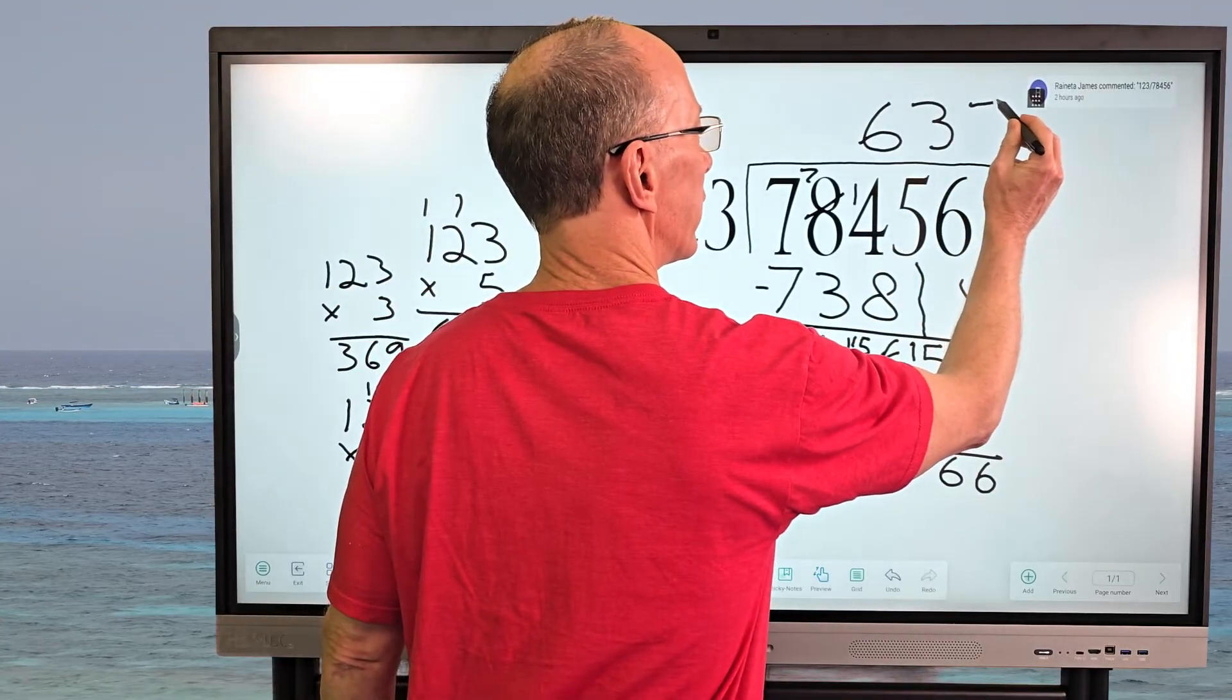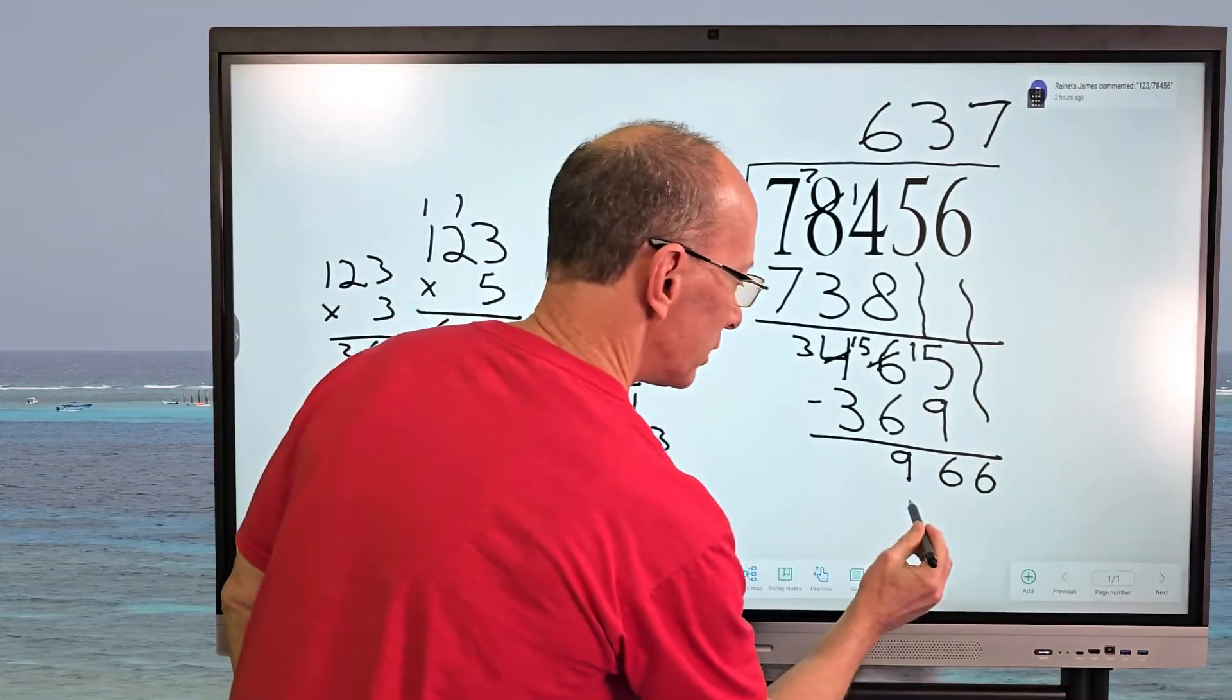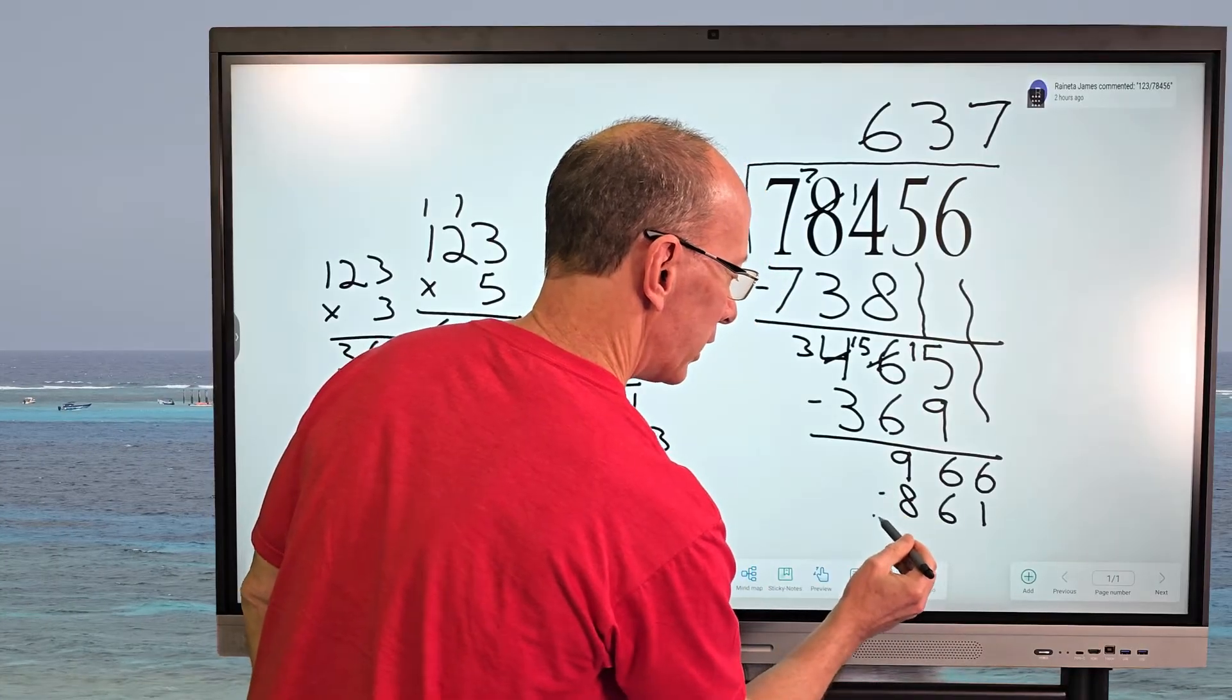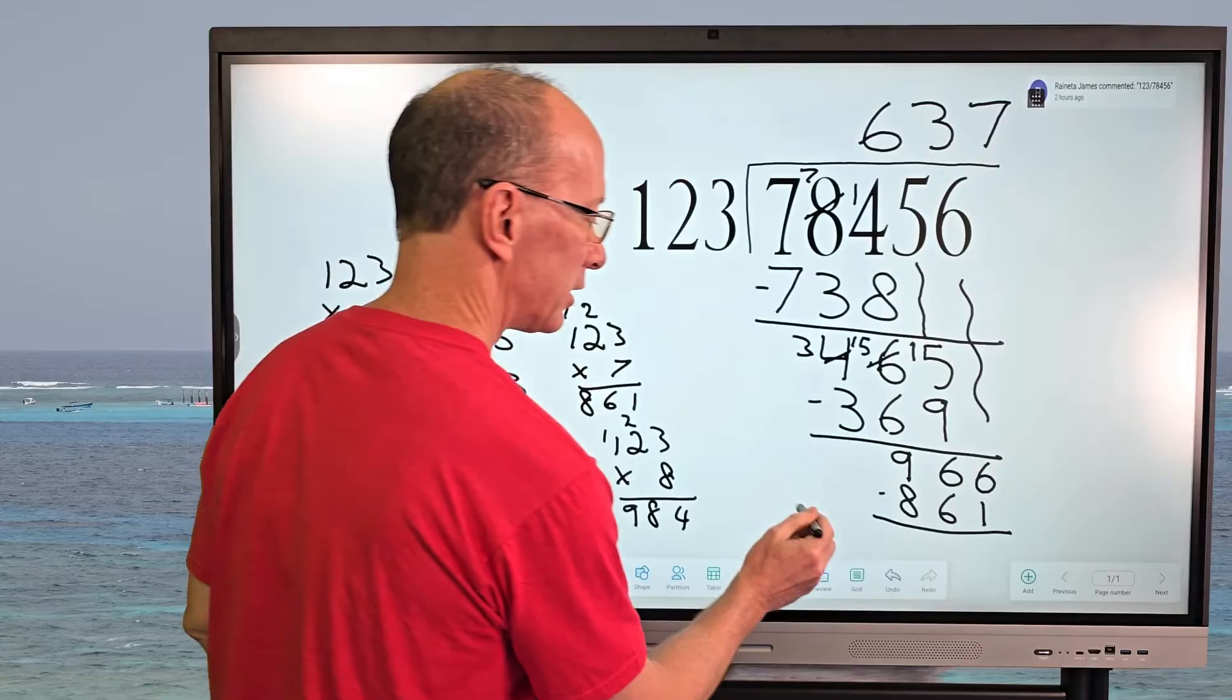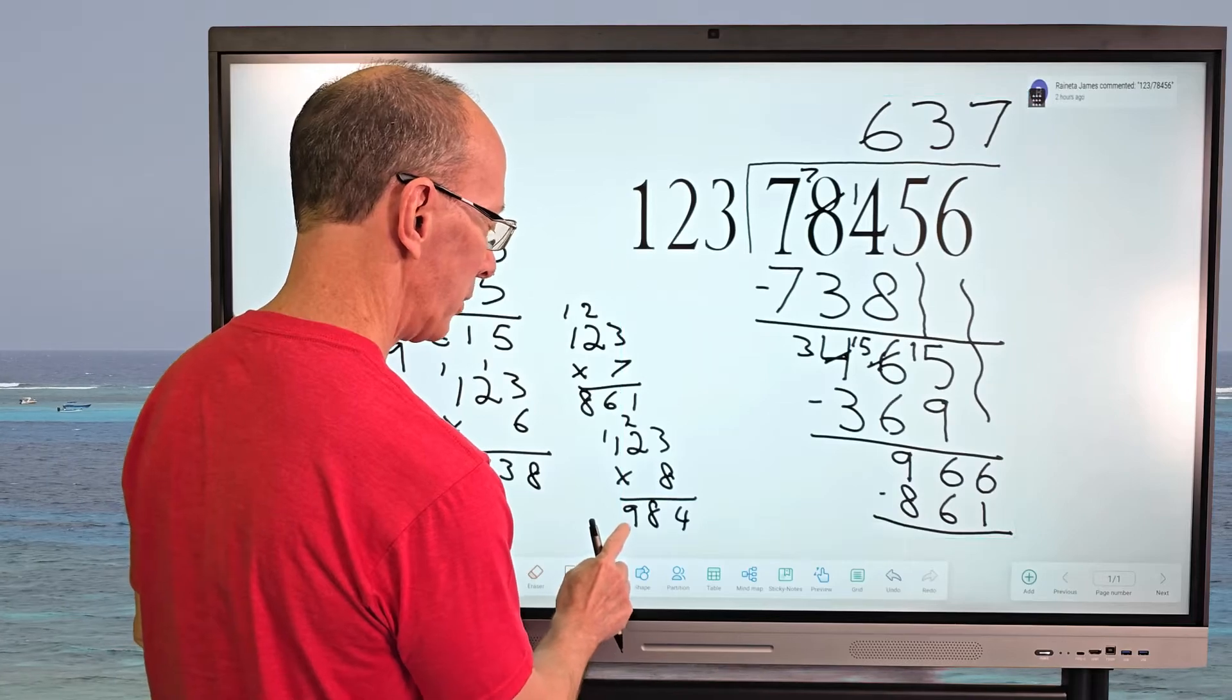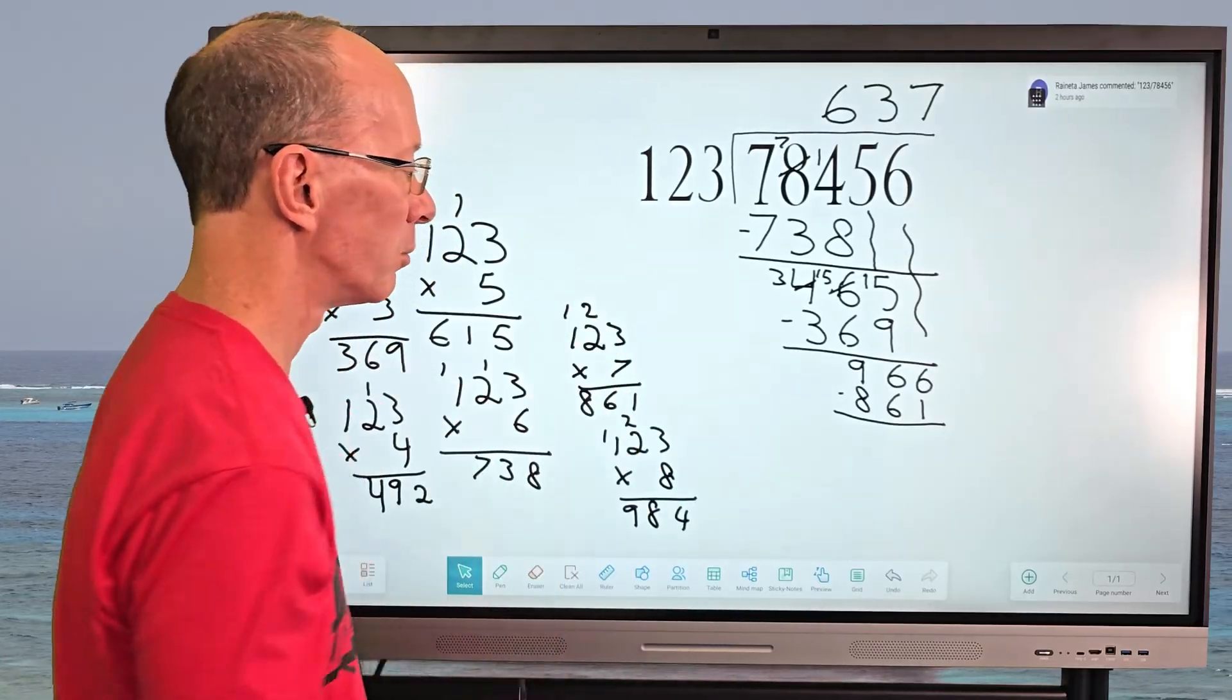So let me go ahead and put the seven right here. So seven times 123 is 861. So go ahead and put 861 right here. Make that a little bit neater. And then I'm going to go ahead and subtract. And I think I'm going to go ahead and shrink this problem. It's starting to get kind of big. So if you're doing this on a piece of paper, you might want to have a little room to write with. So the nice thing about a whiteboard is you can kind of move these numbers around a little bit.